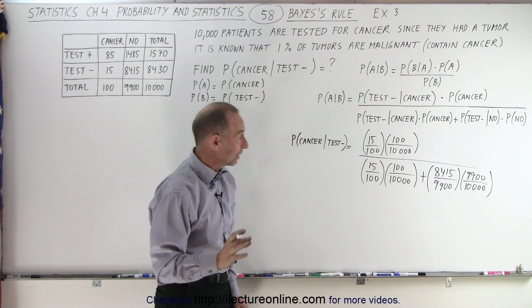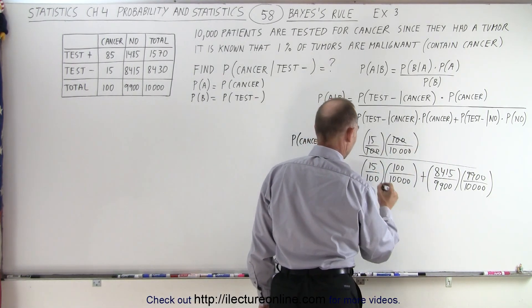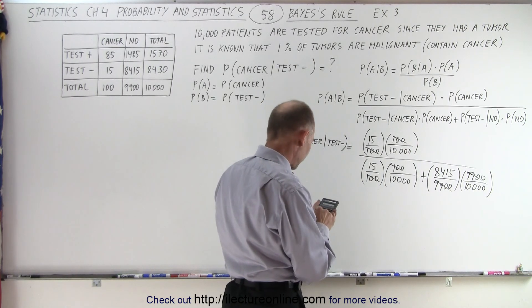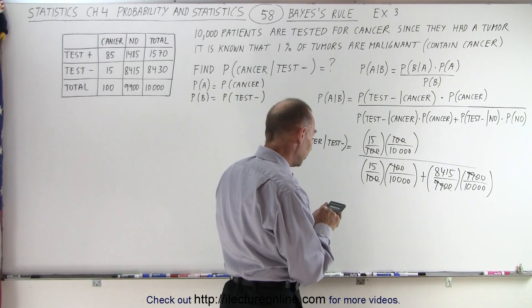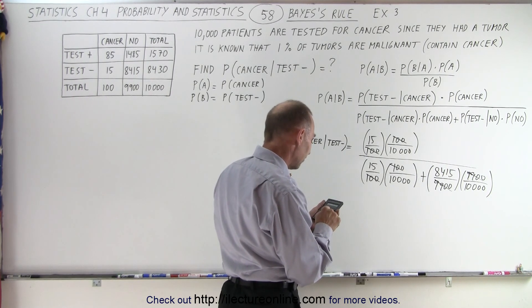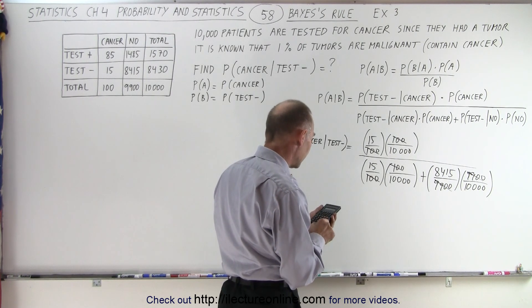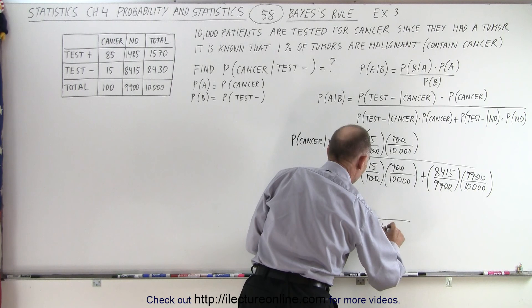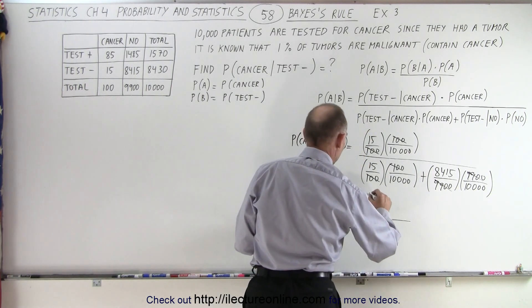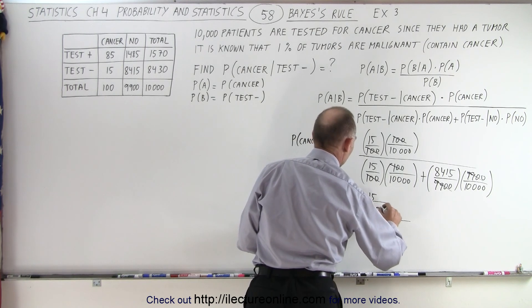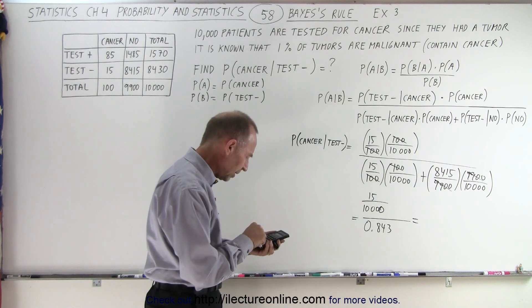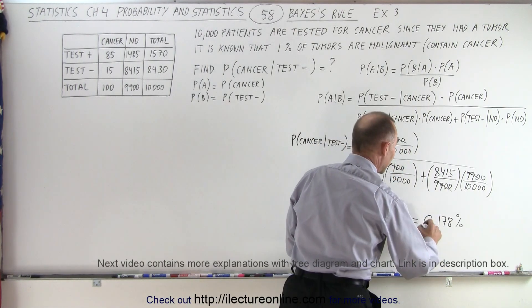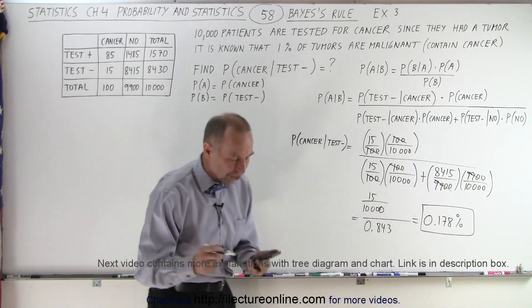Now we need to calculate that probability. We can simplify: the 100s cancel out, and the 9,900s cancel out. So in the denominator we get 15 divided by 10,000 plus 8,415 divided by 10,000, which gives us 0.843 in the denominator. In the numerator we get 15 over 10,000. Multiplying it out, we get 0.178% probability that you have cancer even though you tested negative.